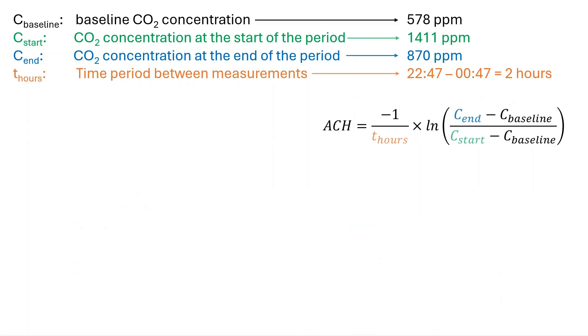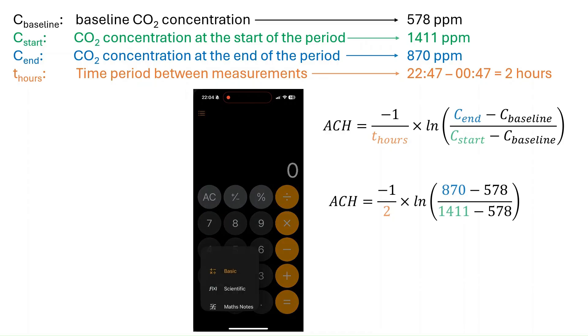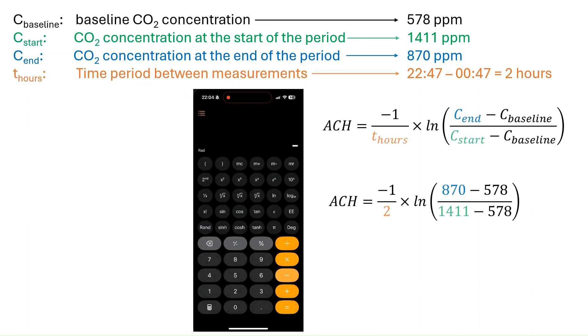Now, put these numbers into this equation and solve for the ACH. This is where you put those numbers. And I'll show you how to calculate that using my calculator. First, you'll need to set your calculator to scientific. Apologies for the slow prototyping.